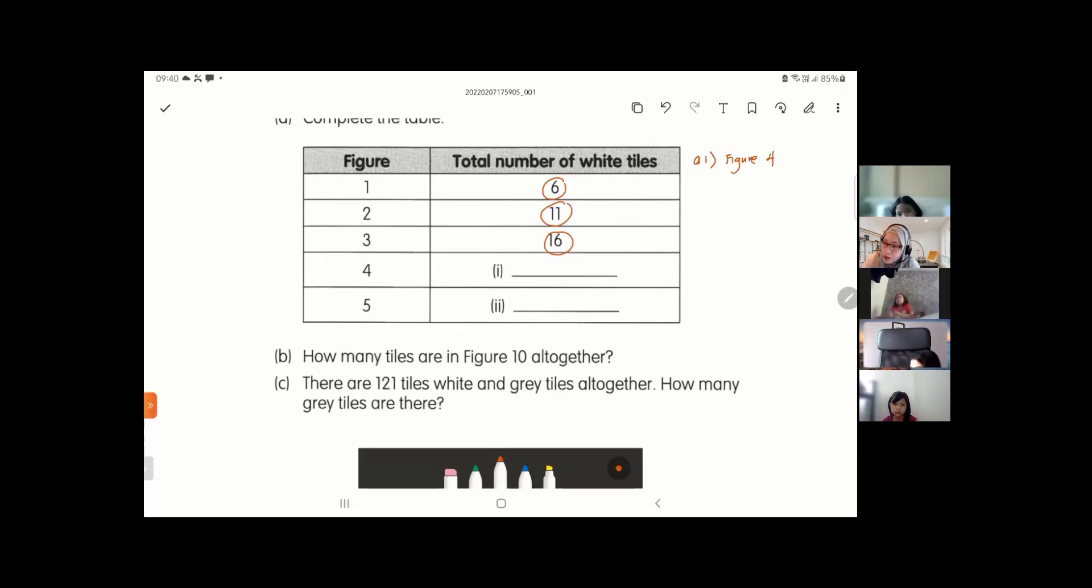So Figure 4 will be, if you see, plus 5 here, plus 5. All of this is plus 5. The pattern is plus 5, or multiples of 5 actually. So next one is 16 plus 5 equals to 21. Then part 2: 21 plus 5 equals to 26. This is 26.